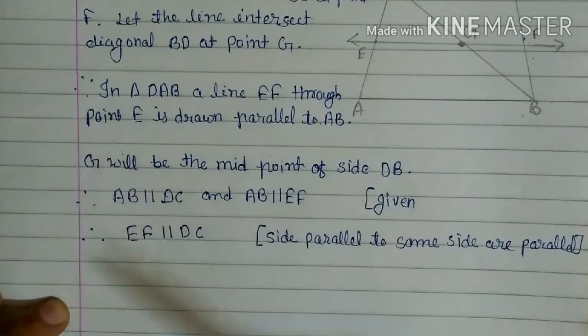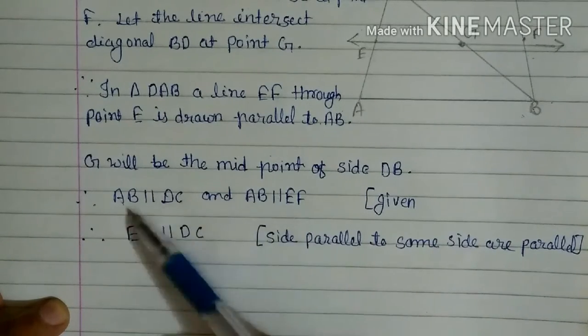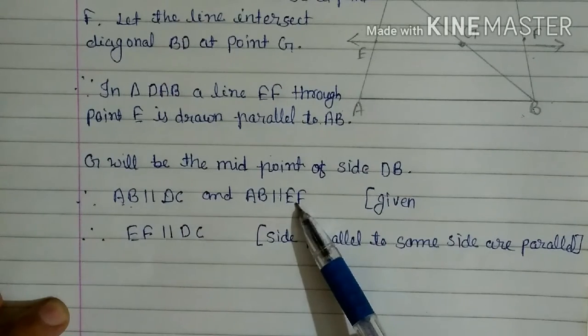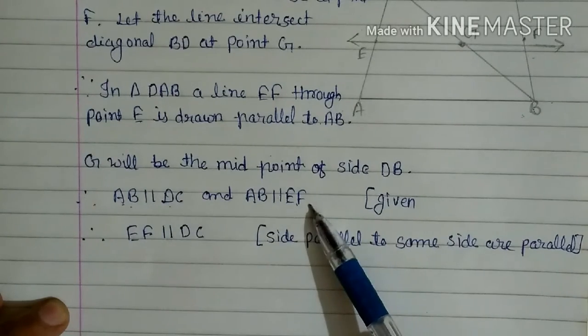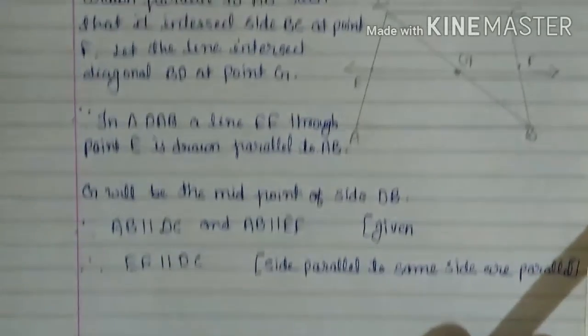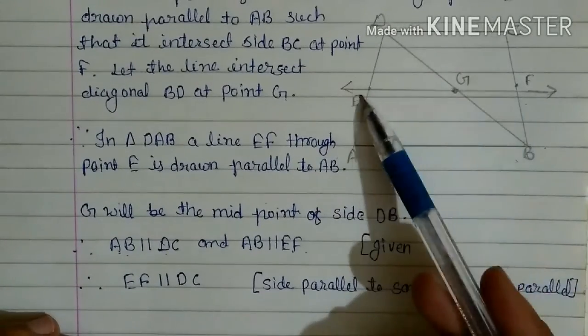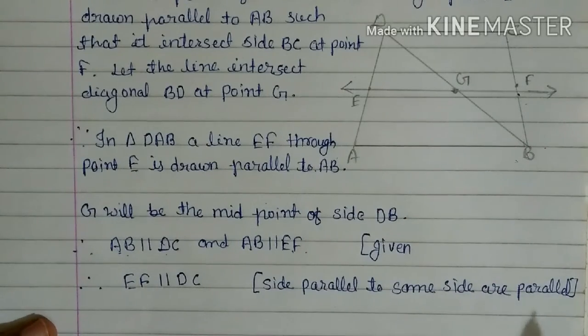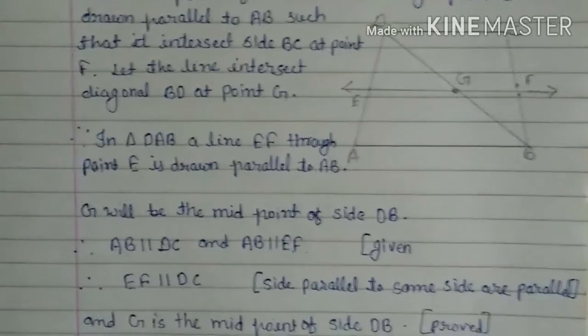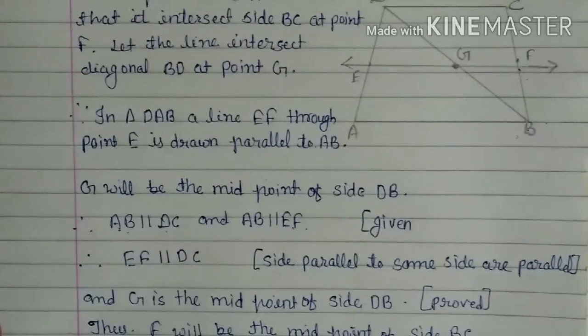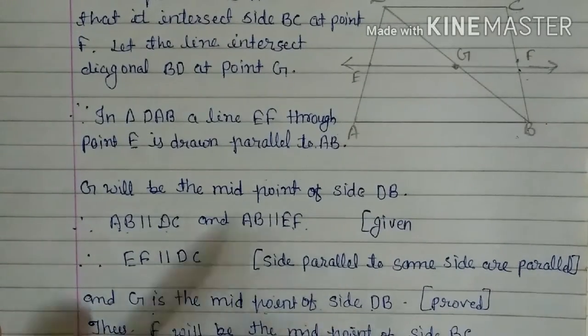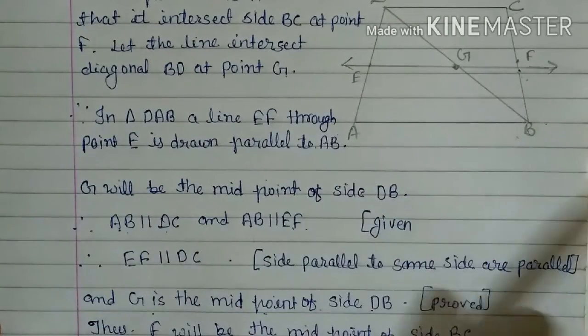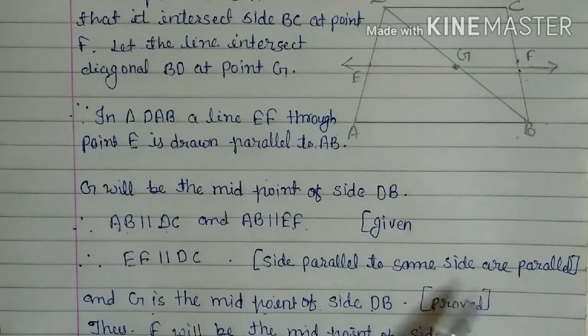So here you see, we compare it: AB parallel DC and AB parallel EF, therefore DC is also parallel to EF. Sites parallel to same sites are parallel. G is the midpoint of side DB. G is the midpoint of DB, we have seen it and proved it.